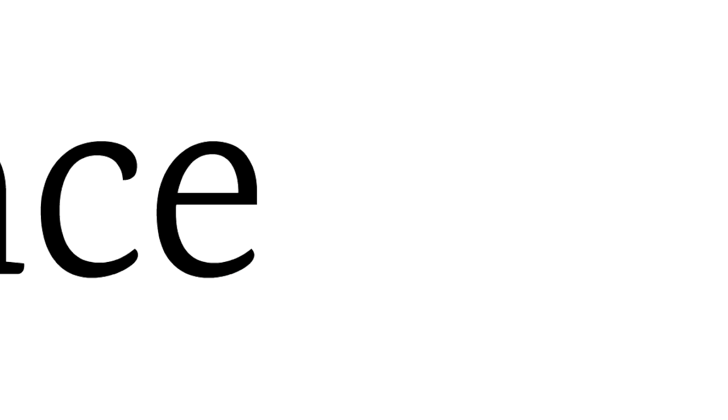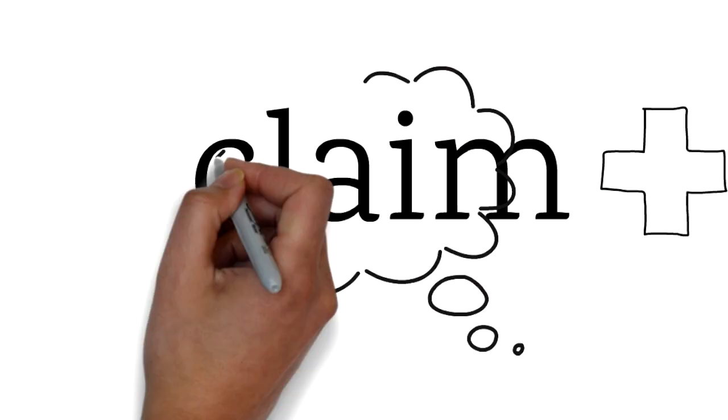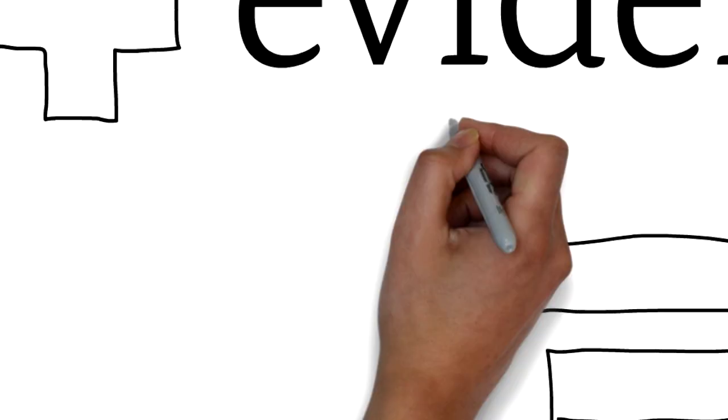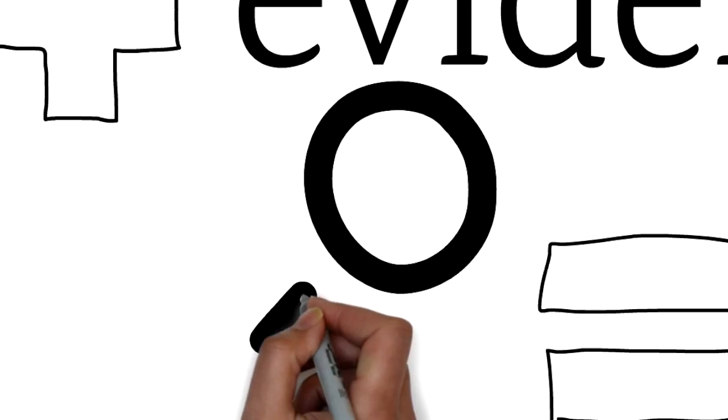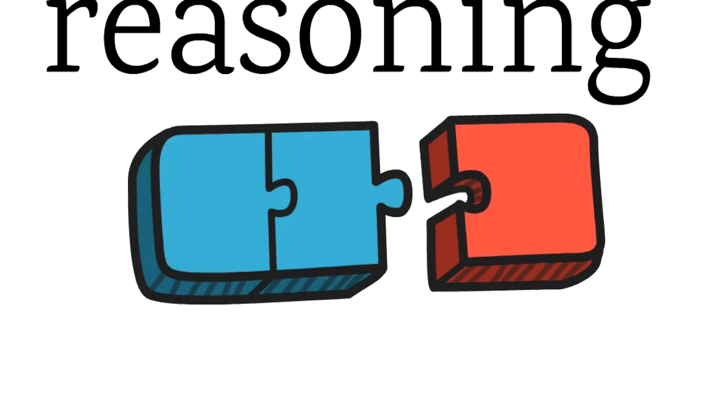Claim, evidence, and reasoning all equal a scientific argument. The claim is what you think. The evidence is the data that you see, and the reasoning is the science that you know that connects your evidence and your claim.